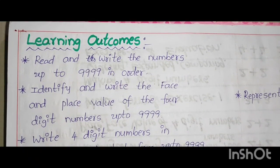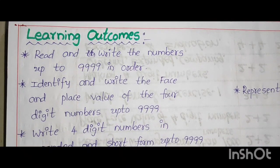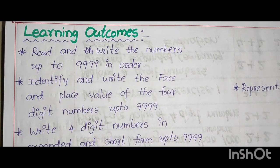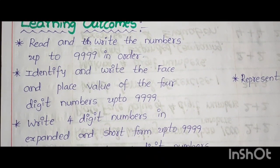Learning outcomes. Read and write numbers up to 9999 in order. Identify and write the face and place value of the 4 digit numbers up to 9999.